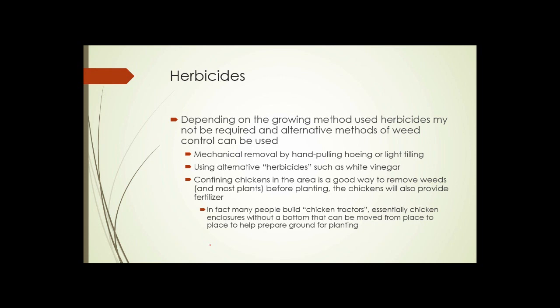Herbicides. Again, depending on the growing method used, herbicides may not be required and alternative methods of weed control can be used. Mechanical removal of weeds by hand pulling or hoeing. You can see in the next slide, someone hoeing weeds. Mechanical removal of weeds, light tilling, using alternative herbicides such as white vinegar. Pure white vinegar sprayed on plants will kill most plants that it's sprayed on, but not result in any harmful residue or long-term change to the soil. And because the damage it does is physical, as opposed to chemical, resistance is a lot less likely to happen when using something like that.